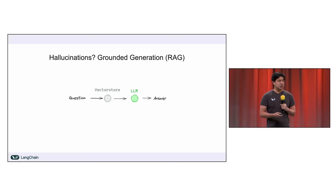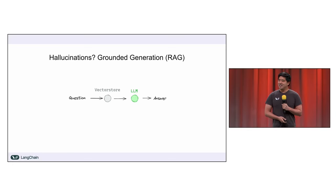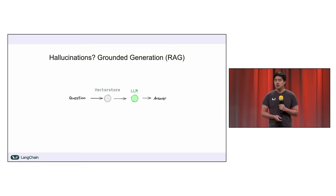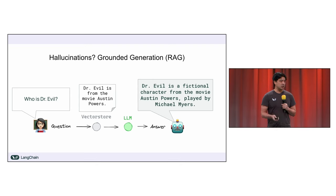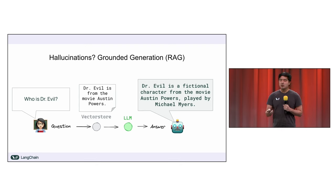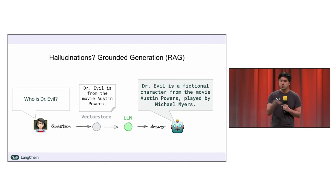For hallucinations, grounded generation — or retrieval augmented generation (RAG), which you might have heard of — is basically grounding your responses in known factual data that you might retrieve from a vector store or some other source. If I ask who is Dr. Evil, and I have a vector store populated with data from IMDB that says Dr. Evil is a character from Austin Powers, then the LLM can use that to hone in on the right Dr. Evil and give more context around who that is.